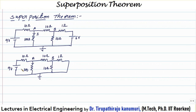If you go for the mesh current method, there are three meshes giving three unknowns, so solving will be difficult. But for nodal analysis, we only have to calculate the voltage at nodes A and B because the remaining nodes already have known values. That is why I am going with the nodal analysis and applying KCL at node A.